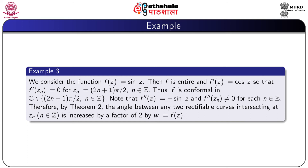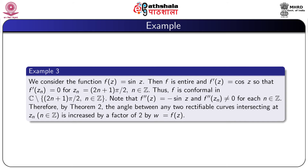Example: suppose f(z) = sin z. Then f is entire and f'(z) = cos z, so f'(zₙ) = 0 for zₙ = (2n+1)π/2 where n is any integer. Thus f is conformal in ℂ except at the points (2n+1)π/2. Note that f''(z) = −sin z and f''(zₙ) ≠ 0 for each integer n. Therefore, by the theorem, the angle between any two rectifiable curves intersecting at zₙ is increased by a factor of 2 by the mapping w = f(z).